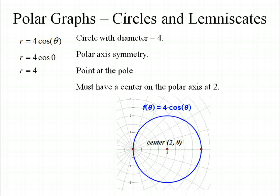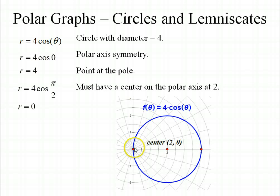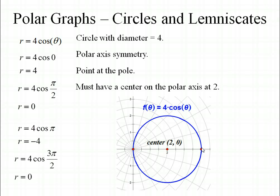Let's plug in 0 for our angle measure. Cosine of 0 is 1, so we end up with a radius of 4. That gives us a point on the polar axis at 4. Let's try pi over 2. Cosine of pi over 2 is 0, so that gives us a point at the pole. Then let's try pi. Cosine of pi is negative 1, so we end up with negative 4. If we go to pi and then go back on the other side of the pole to negative 4, we're going to end up with the same point we already found. If we plug in 3 pi over 2, we get 0 again, so that's another point at the pole. You might want to try a few more points between 0 and pi over 2, just to make sure you've drawn your circle correctly.